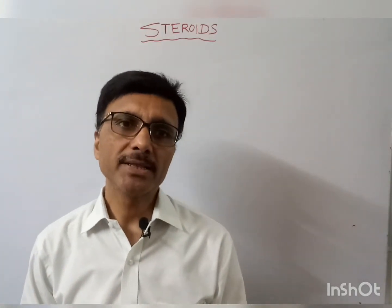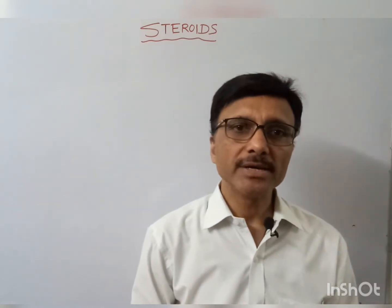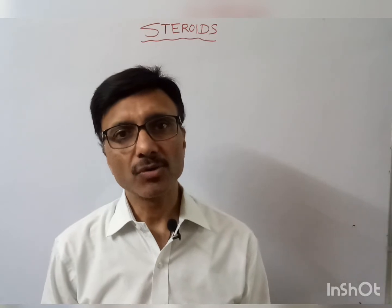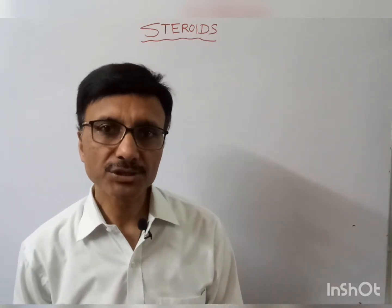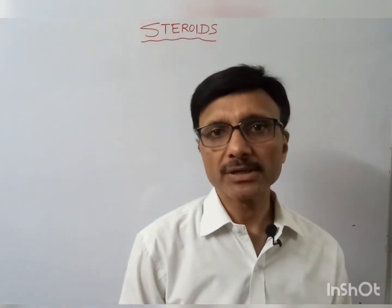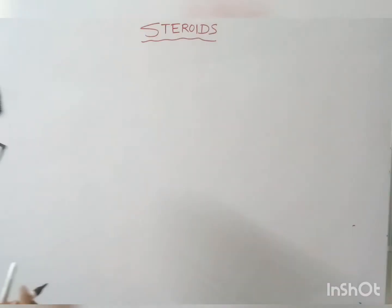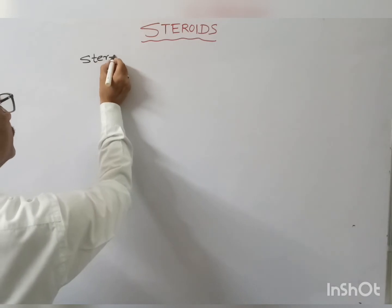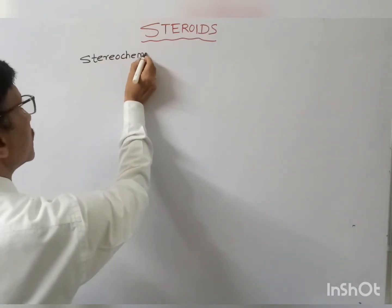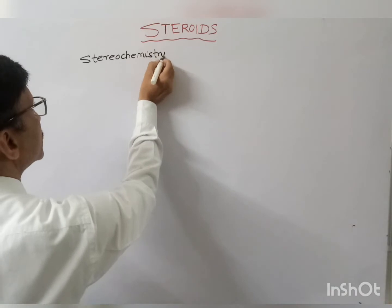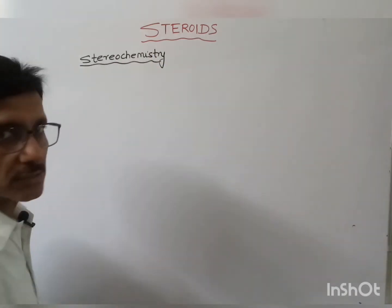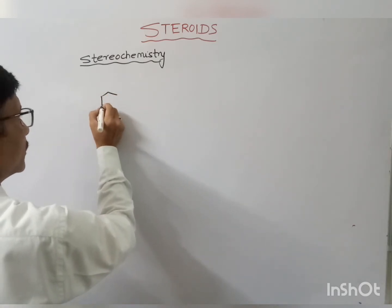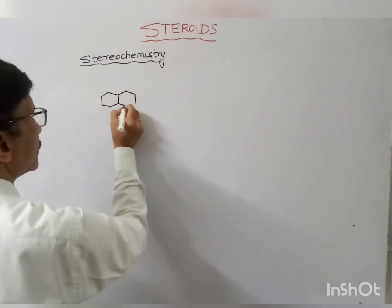Hello students. Today in this lecture I will tell you the stereochemistry of steroids. In my previous lecture I told you about the introduction and nomenclature of steroids. In stereochemistry we will see the optical isomers and the geometrical isomers of the steroids.